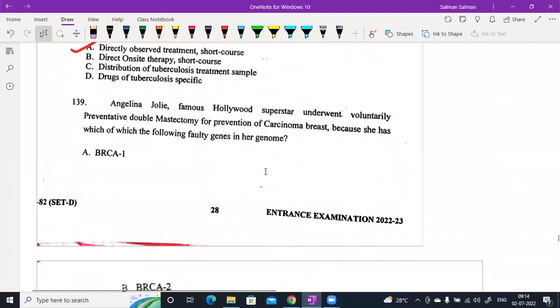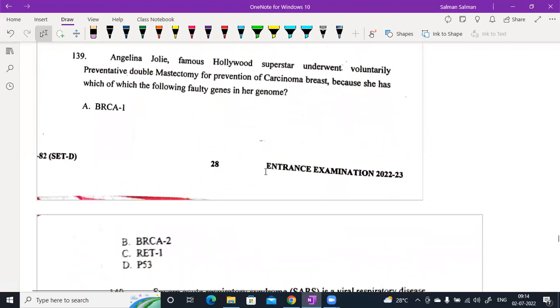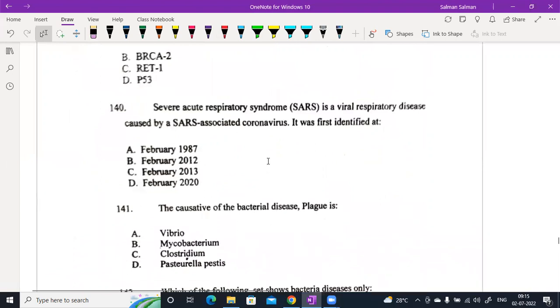Question 139. Angelina Jolie, famous Hollywood superstar, underwent voluntary preemptive double mastectomy because she had which of the following quality genes in her genome? This is BRCA1. Now, look at question 140, it is a doubt question. There are two questions in the whole paper, question number 140 and question number 142. These are doubt questions. There is no exact answer. The best possible we can take it. Otherwise, we have to wait for the answer.